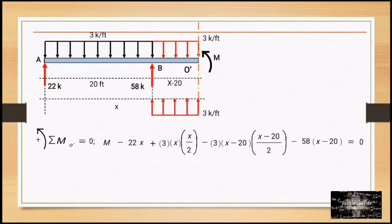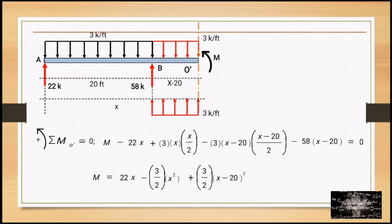To simplify, M is equal to 22X minus (3/2)X² plus (3/2)(X−20)² plus 58(X−20).